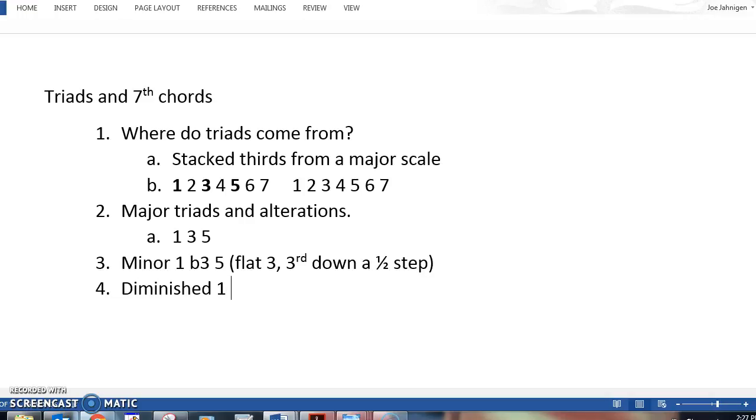A diminished triad is a 1, flat 3, flat 5. So that is 1, then a lowered third, and a lowered fifth. You're making alterations to a major chord, a major triad, to get the other triads.